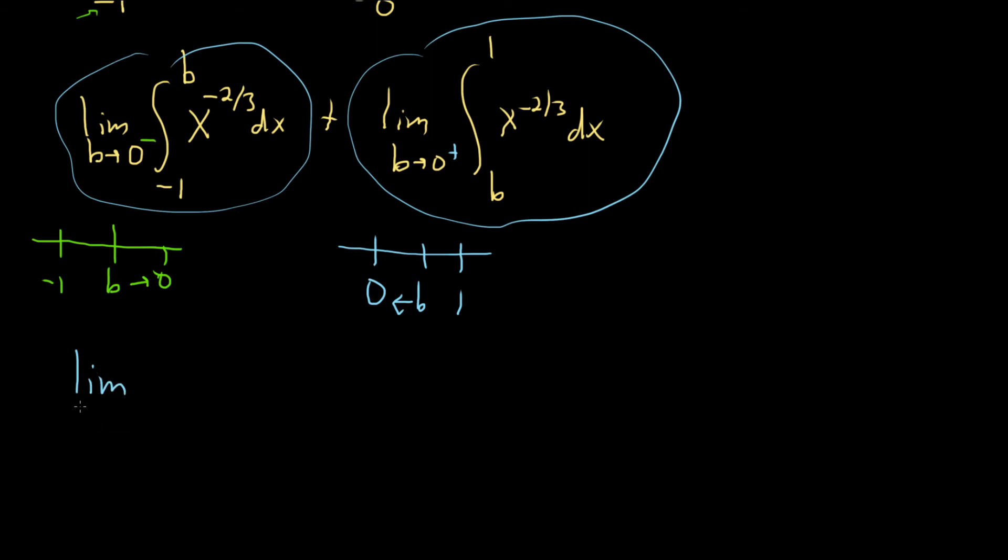So this is the limit as b approaches 0 from the left. When you integrate this, you add 1. So it'll be negative 2 thirds plus 1, which is 1 third. So we have x to the 1 third. And we're supposed to divide by 1 third. But when you divide by 1 third, it's the same thing as multiplying by 3.